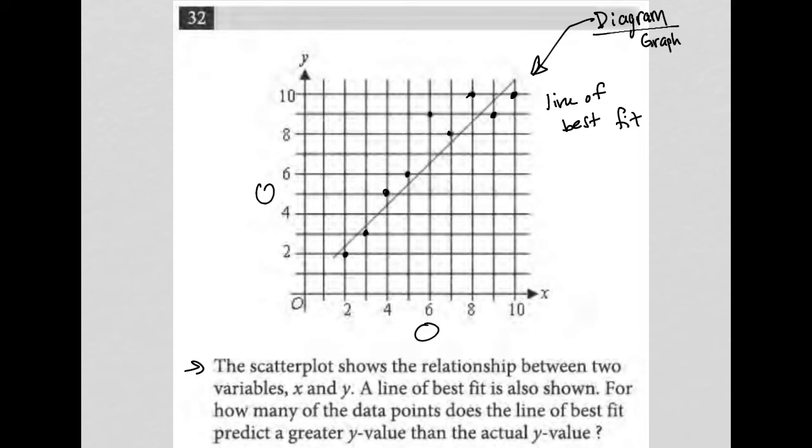The line of best fit, for instance here, predicts a y value that is greater than the actual. Again here and here and here. So what am I saying? When we look at when x is 10, the line of best fit says our point should be, I'll just use a different color, our point should be here, but the actual data point is there.